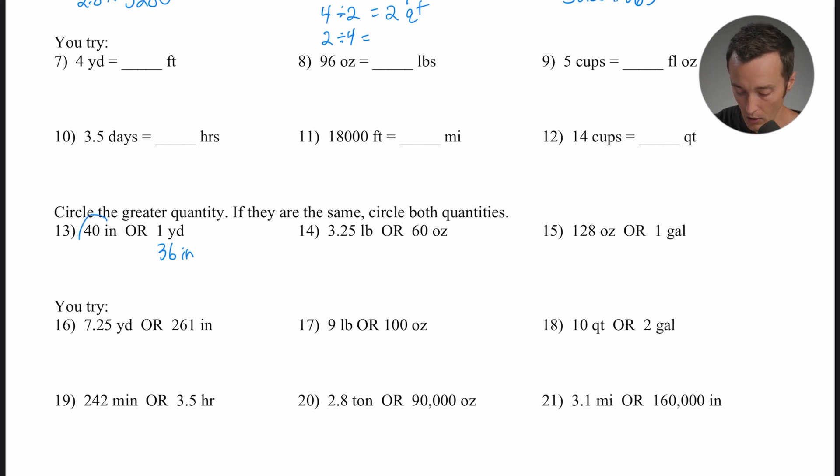Okay, how about number 14? 3.25 pounds or 60 ounces. I'm going to take that first one, the 3.25 pounds, and convert it to ounces, because I know in every pound is 16 ounces. So really what I need to grab a calculator and do is 3.25 times 16, because there's 16 ounces in a pound. And I think I already multiplied that out, yeah. So 3.25 times 16 is 52 ounces. So what ultimately is bigger, 3.25 pounds or 60 ounces? Well, it would be 60 ounces, because 60 is bigger than 52.